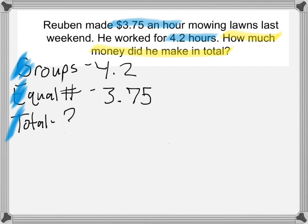I'm going to put a question mark for the total, because that's what we're trying to find. When the total is missing, that gives us the clue that we are going to multiply, because we have equal groups going on. Equal groups will either be multiplying or dividing. In order to divide, you need a total to split up into those groups — we don't have a total, we're trying to find it — which means we're going to multiply. Working towards the total, you multiply.